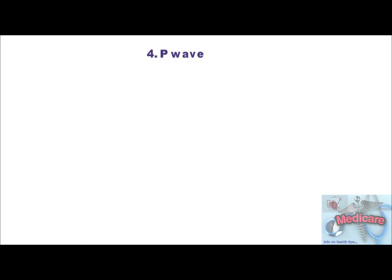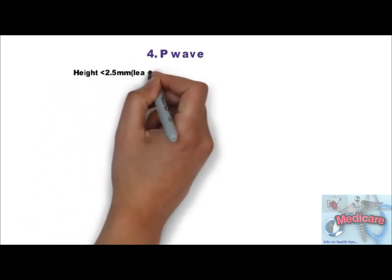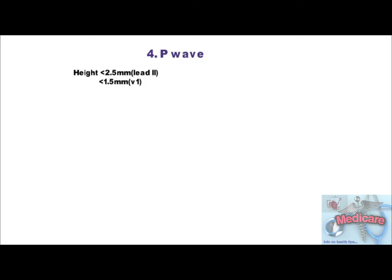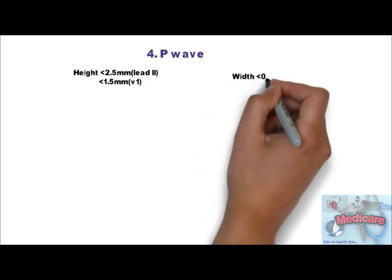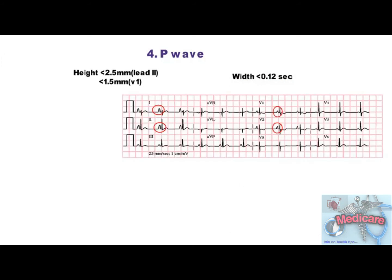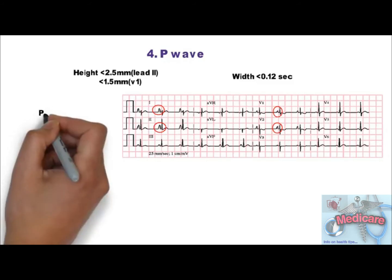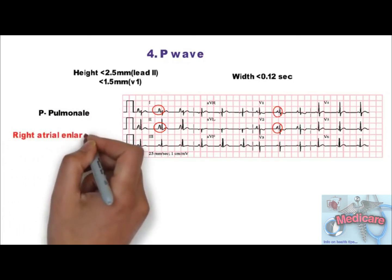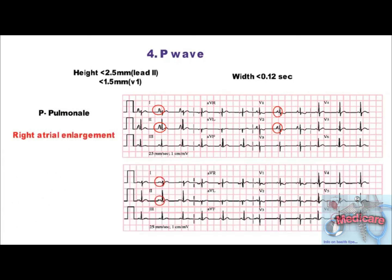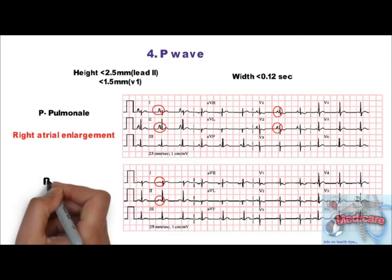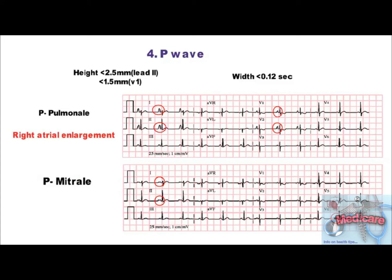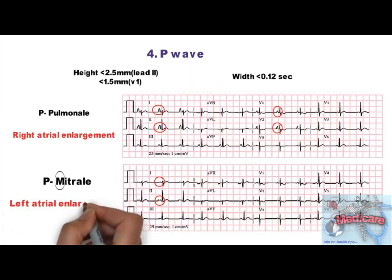Step 4 is P wave. First, see whether P wave is present or not; if present, examine the morphology. For P wave morphology, look at lead 2 and V1. Height of a normal P wave is less than 2.5 mm in limb leads and less than 1.5 mm in precordial leads, and the width should be less than 0.12 seconds. In this ECG, P waves in lead 1 are tall and peaked — these are called P-pulmonale, seen in right atrial enlargement. If P waves are bifid or have a notch, it is called P-mitrale, remembered by its M-shape, seen in left atrial enlargement.